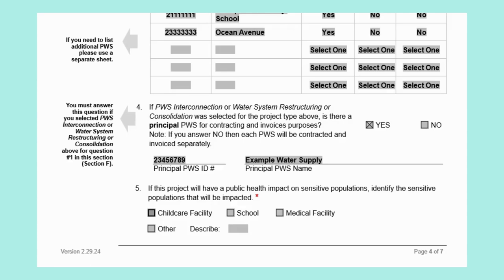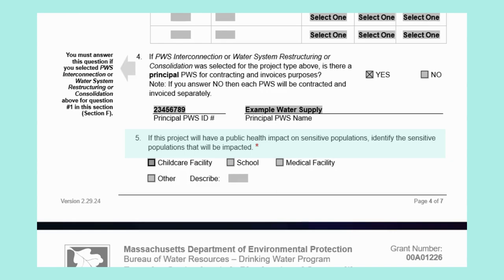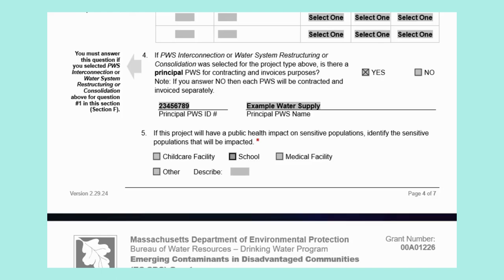For those that skipped over questions 3 and 4, we are now back to questions applicable to all PWSs. Question 5: If this project will have a public health impact on sensitive populations, please identify the sensitive population. You may select multiple population types if applicable. These populations may include a child care facility, a school, a medical facility such as a hospital, doctor's office, or urgent care, or another sensitive population. In our case, one of the PWSs involved in the consolidation project is a primary school, so I will select school as a sensitive population.